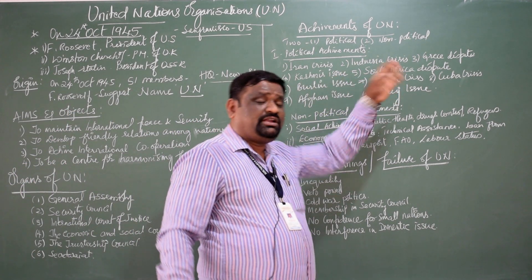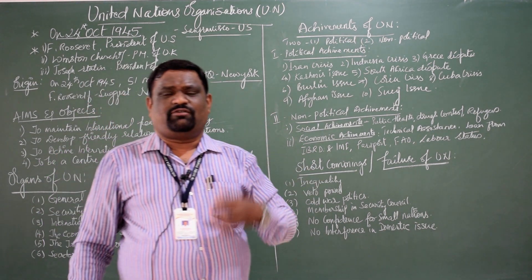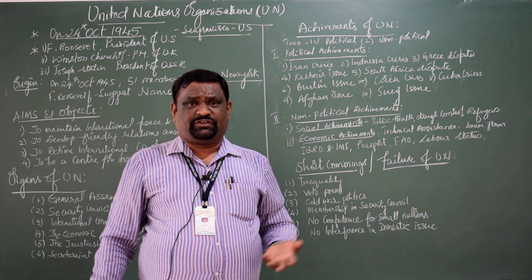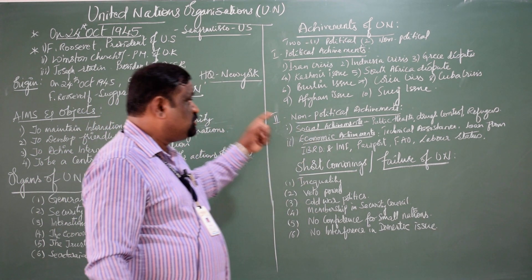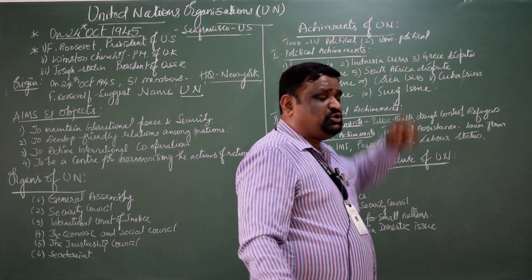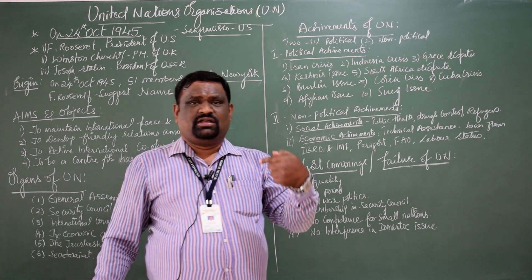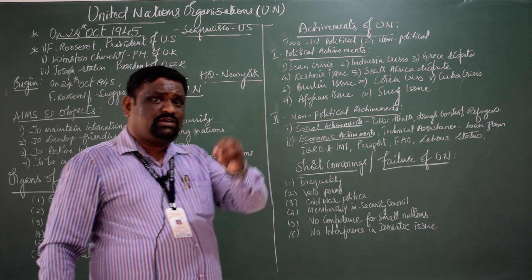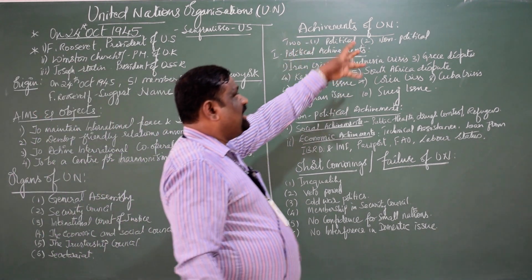Coming to the Korean issue — another very important one: Korea was divided into North and South Korea and they were fighting each other for land as well as resources. South Korea requested the UN, and the UN interfered with the help of its peacekeeping force, and finally it resolved the issues. The result of this UN interference is the existence of South Korea and North Korea as separate states today. Similarly, regarding the Suez water dispute — a European channel water dispute between Poland and England — again there was an issue between these two countries and the UN interfered and resolved it.